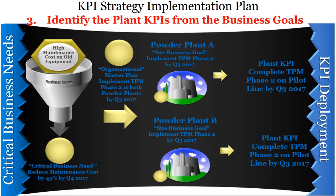Step 3: Identify plant KPIs from the business goal. High maintenance costs due to old equipment is the critical business need. A 45% reduction in maintenance costs by Q4 2017 is the organizational master plan goal, which declares to implement TPM Phase 2 at both powder plants by Q3 2017. The site business goal for both Plant A and Plant B is to implement TPM Phase 2 at both powder plants by Q3 2017. This goal is further broken down into the main plant KPI: complete TPM Phase 2 on the pilot line by Q3 2017.